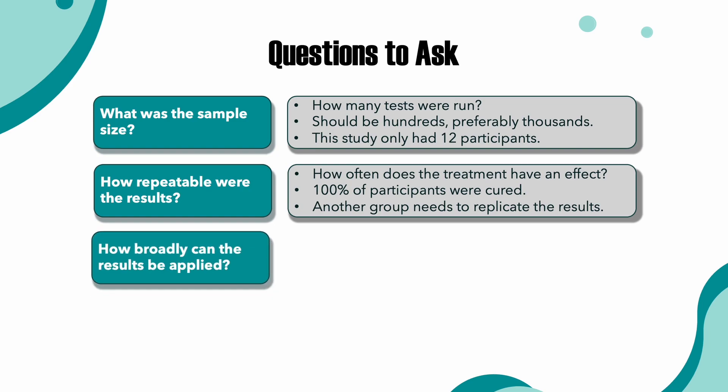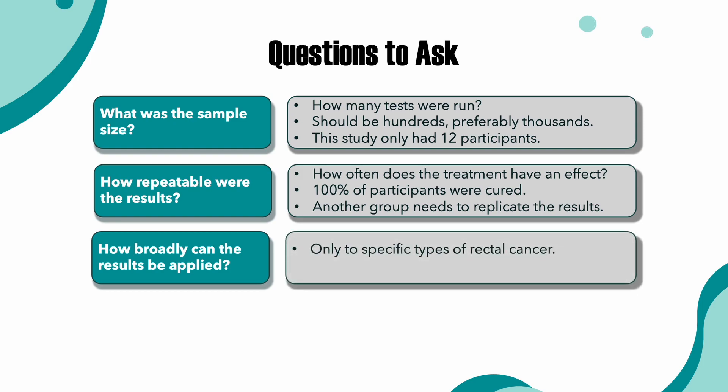Question three: how broadly can the results be applied? The patients in this study all had a very specific type of rectal cancer, which means that the treatment might not be useful for other types of cancer. Even though there was some diversity in the backgrounds of the participants, the researchers acknowledged that they needed to test on a more racially and ethnically diverse group before these results could be applied to the whole population.